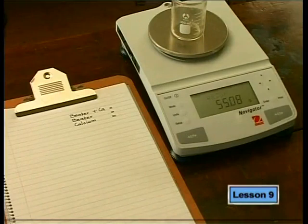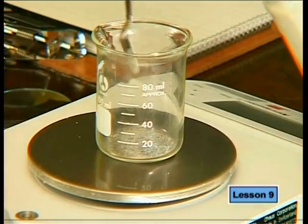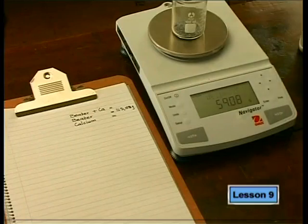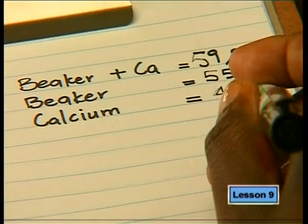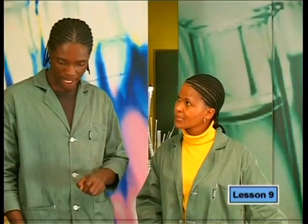First, find the mass of the beaker and record it. Then add a sample of calcium and record this reading. The mass of calcium is found by subtracting the beaker mass from the combined mass — giving 4.0 grams of calcium. In the experiment, we also need enough water for the calcium to react completely, so let's look at the equations to determine how much water will be needed.